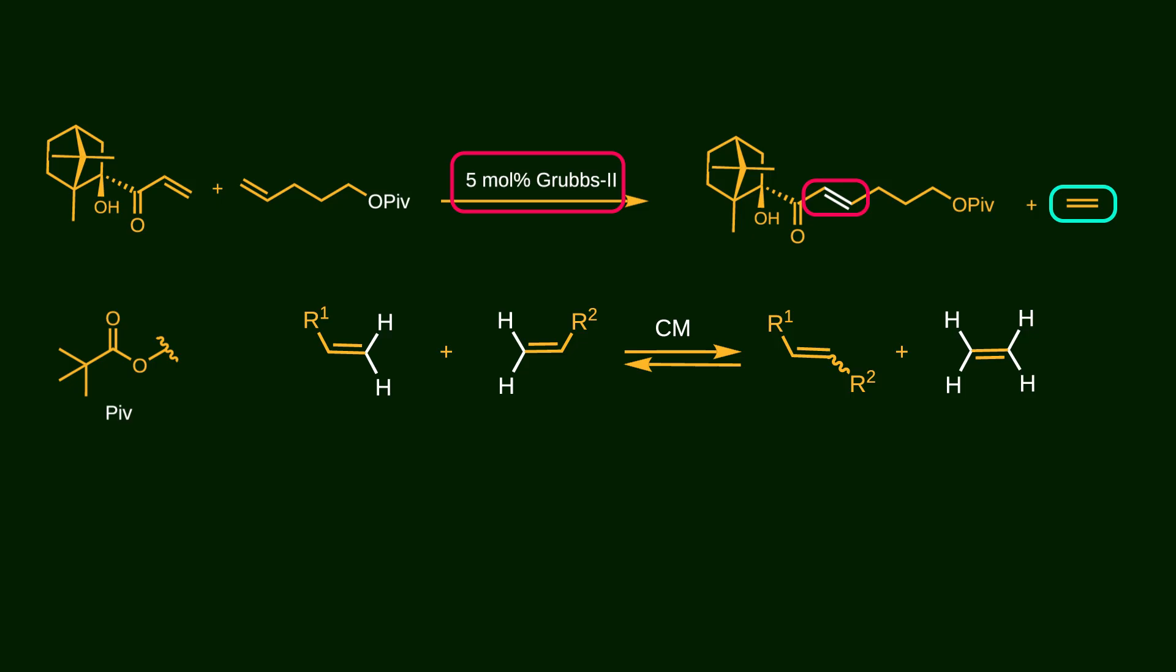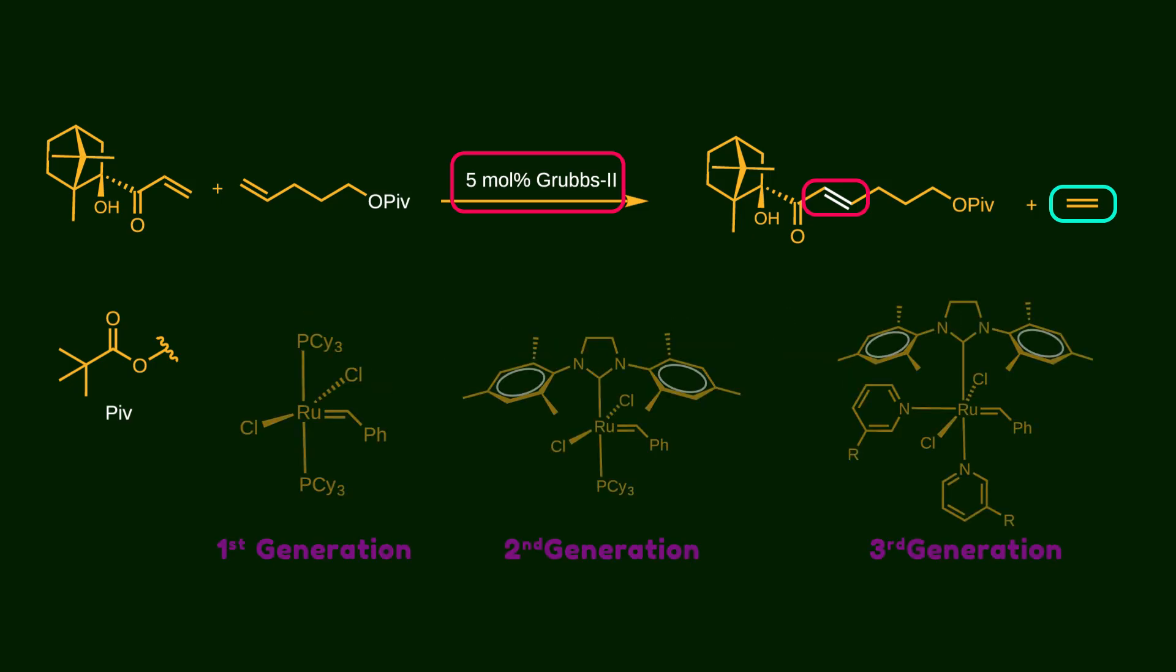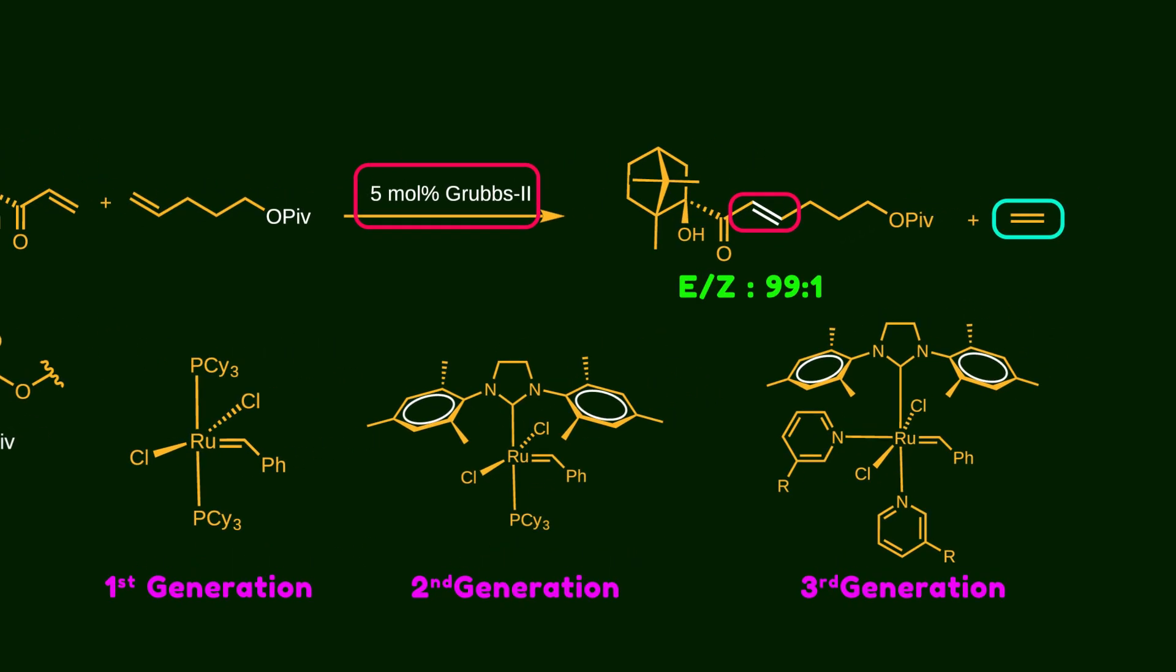Second generation Grubbs catalyst is used in this reaction. Actually, there are three generations of Grubbs catalyst based on ruthenium, which are widely used in organic synthesis due to their bench stability and high selectivity. In our case, the second generation Grubbs catalyst provides significant E-selectivity.